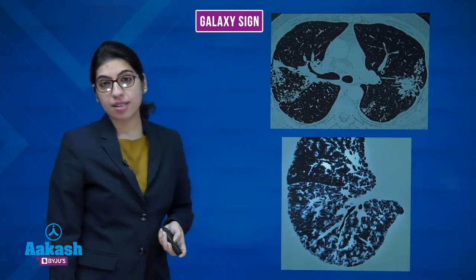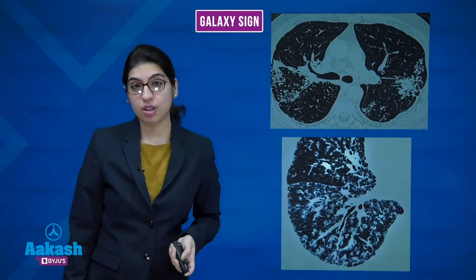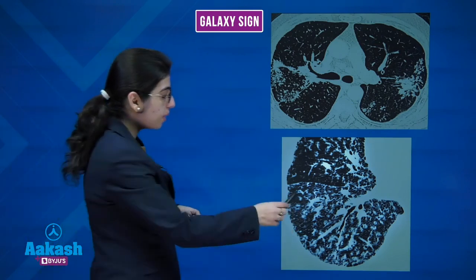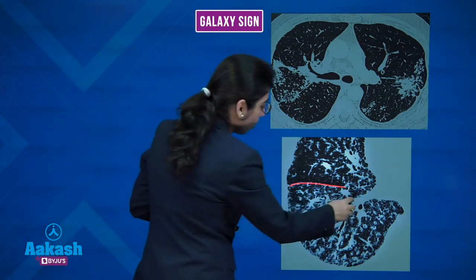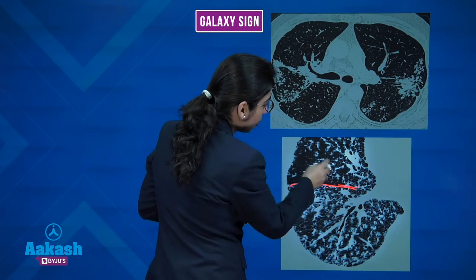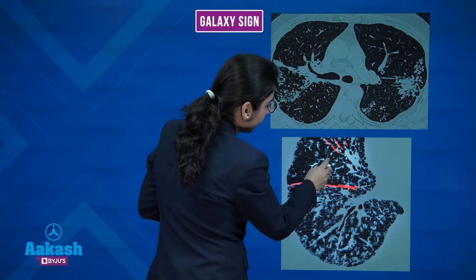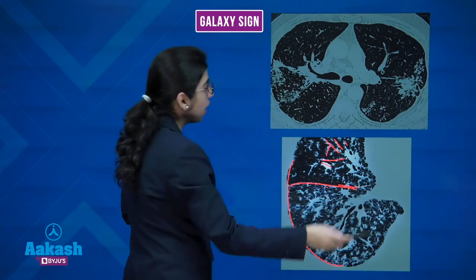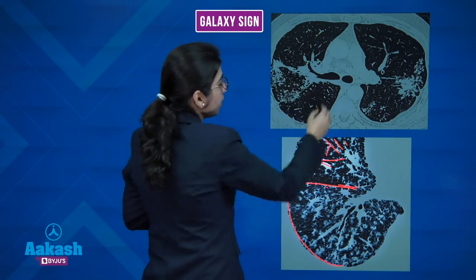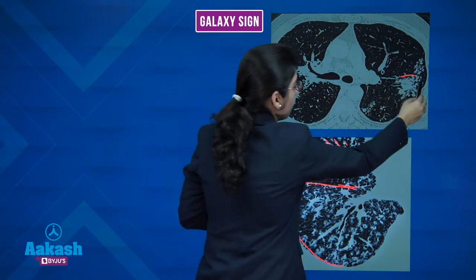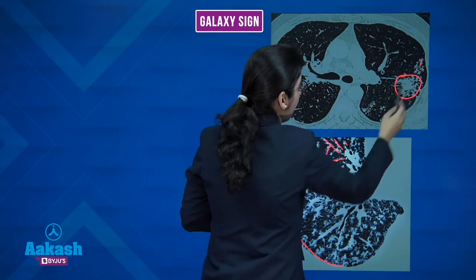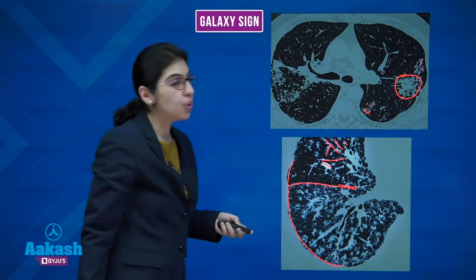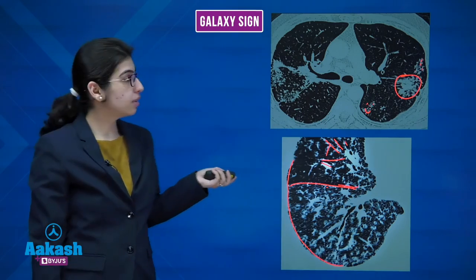On HRCT — the investigation of choice for sarcoidosis — you will see multiple perilymphatic nodules: nodules along the fissure, along the peribronchovascular system, and on the pleura. These may coalesce to form areas of consolidation with background nodules, giving the galaxy sign.